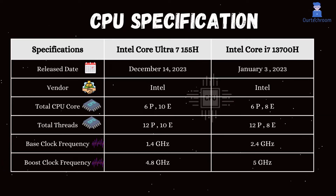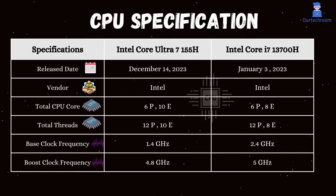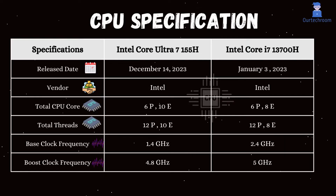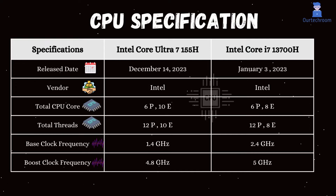The base and boost frequencies of the Intel Core i7-13700H are higher than those of the Intel Core Ultra 7 155H. The i7-13700H's higher clock speed can offer advantages in both single-core and multi-core performance tasks.